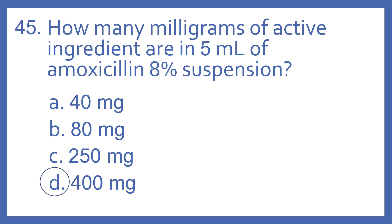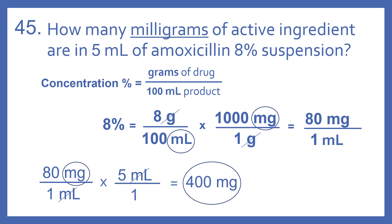And the answer is D, 400 milligrams. So concentration as a percentage equals grams of drug per 100 milliliters of product. 8% means there are 8 grams of drug per 100 milliliters. So we'll go ahead and convert that to milligrams since we're looking for milligrams. So 8 grams per 100 milliliters times 1,000 milligrams per 1 gram equals 80 milligrams per 1 milliliter.